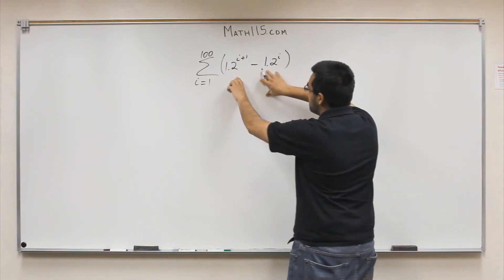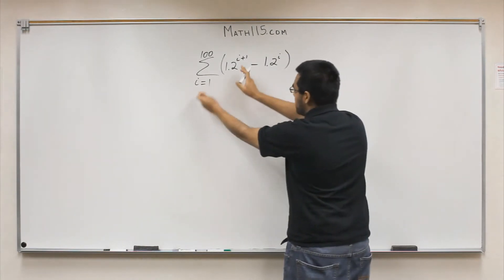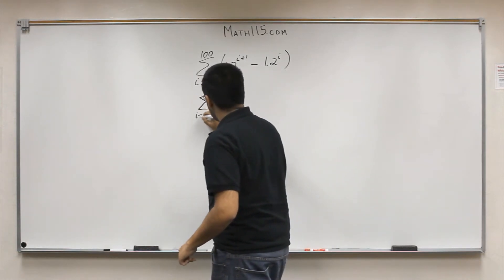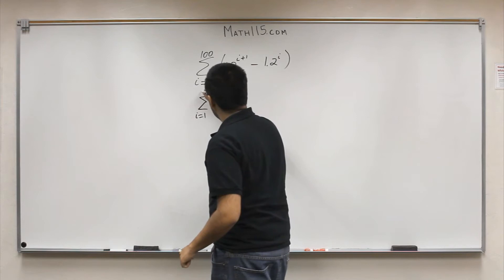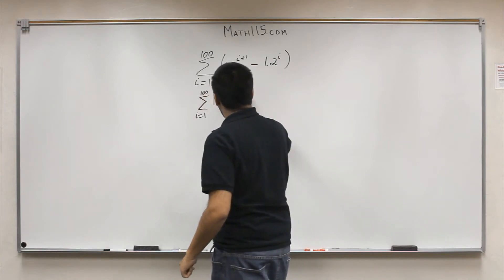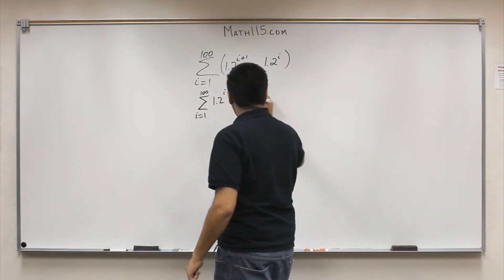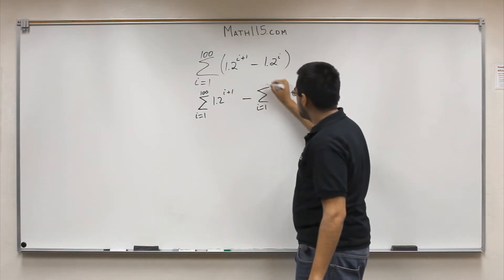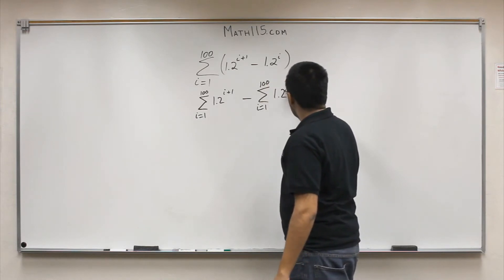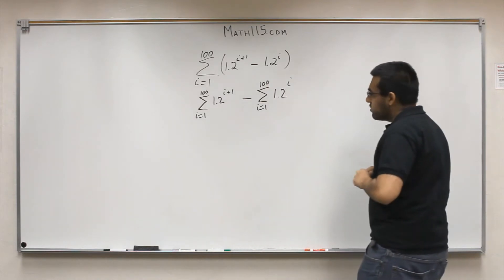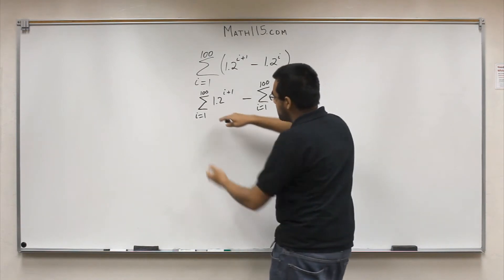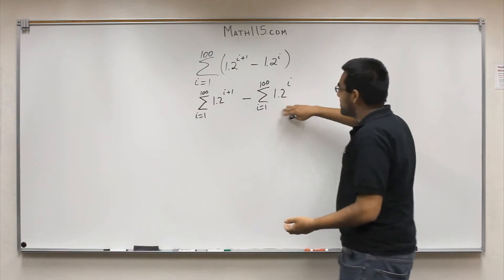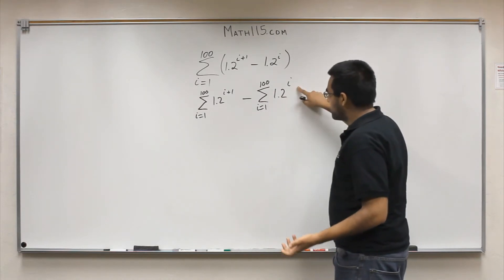The first thing we're going to do is break this up into two separate summations so that we can deal with each part separately. So we'll have the summation from i equals 1 to 100 of 1.2^(i+1), minus the summation from i equals 1 to 100 of 1.2^i. Now we know that the summation of 1.2 raised to something is going to be similar to the other summation, so there is some portion between these two summations where they overlap.